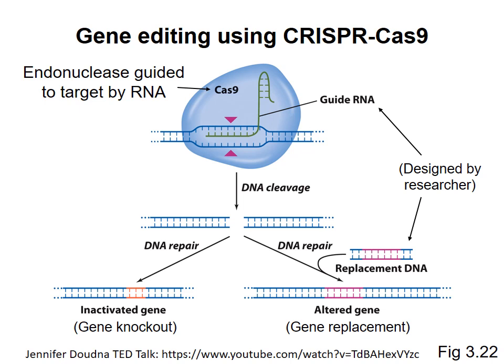A powerful method to edit genomes is the CRISPR-Cas9 system. CRISPR stands for Clustered Regularly Interspaced Short Palindromic Repeats. Cas9 is an endonuclease that creates double-strand breaks in DNA. Unlike restriction endonucleases, each of which cuts DNA at a defined, unchanging target sequence, Cas9 is directed to cut specific sites on DNA by a guide RNA that binds to the enzyme.